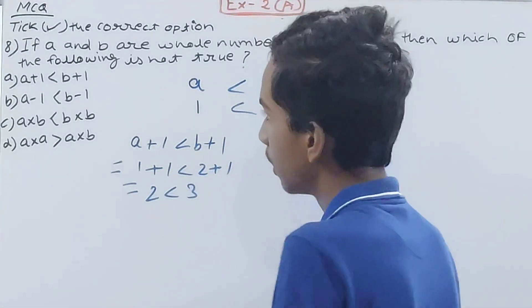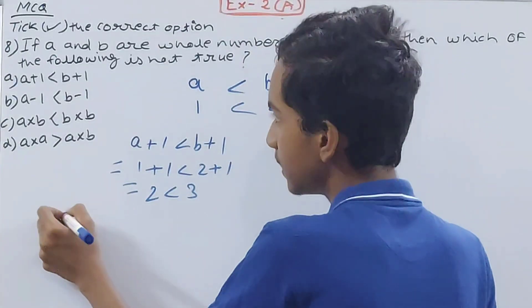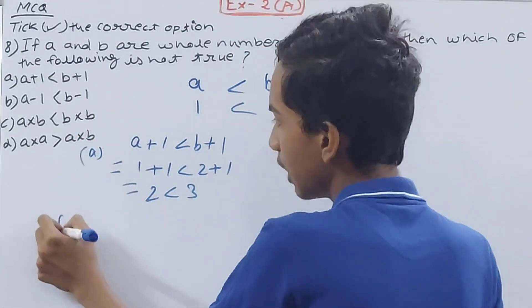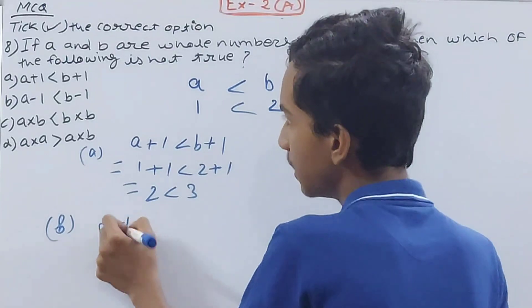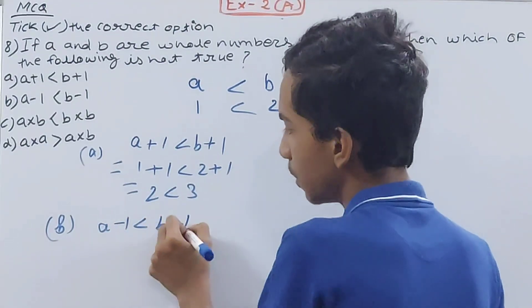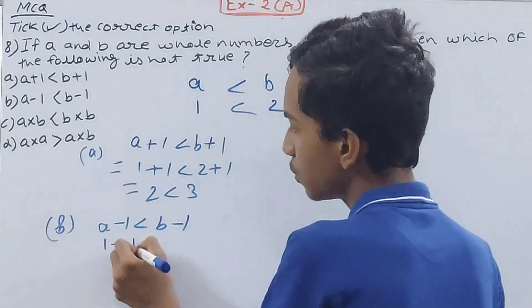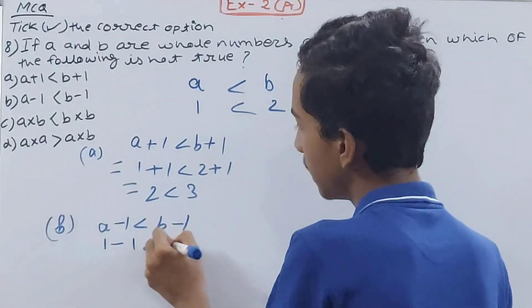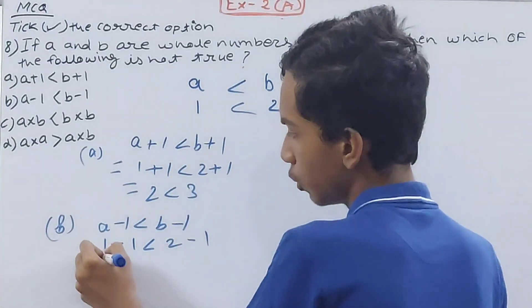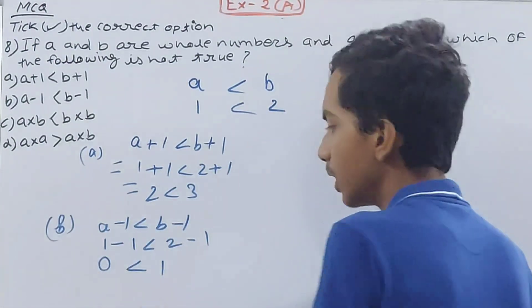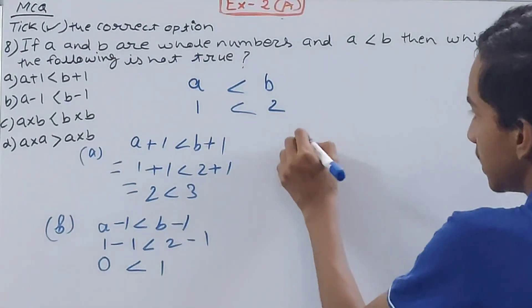Let's see the second option. A minus 1 is less than b minus 1. Again, one minus one is less than two minus one. So zero is less than one. This is also true.